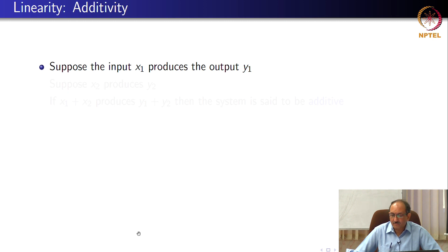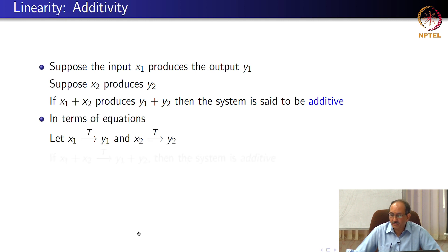Additivity is very simple. If x1 produces y1, x2 produces y2, you require x1 plus x2 to produce y1 plus y2, which means the system is additive. In terms of equations, this is the notation that is used. x1 plus x2 produces y1 plus y2, the system is additive.